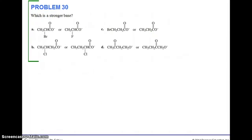Problem 30, which is a stronger base? Remember that a weaker acid has a stronger conjugate base. So look at these as acids and then decide which is the stronger conjugate base. These molecules in A are similar except for their electron withdrawing group. Remember the weaker acid will have the stronger base.